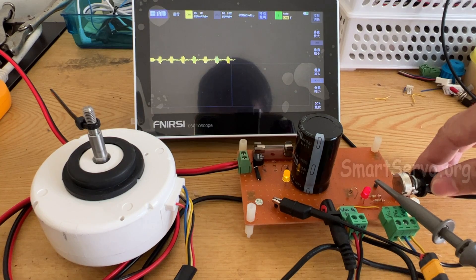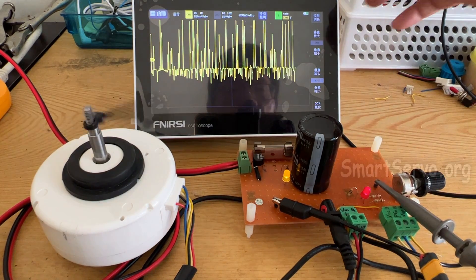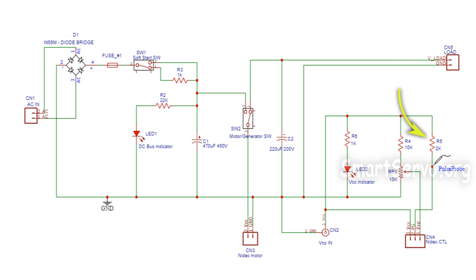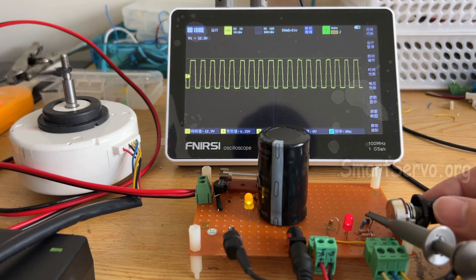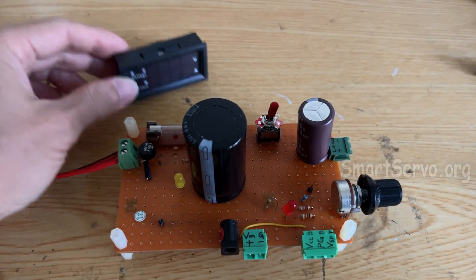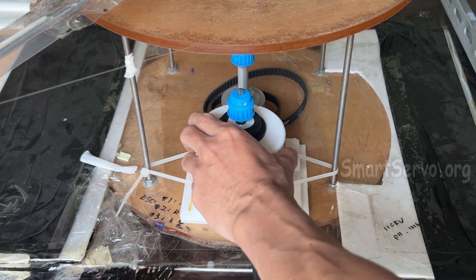In addition, the speed feedback signal PG cannot be measured directly. Add a pull-up resistor and measure again to get a square wave signal. Add two voltage and ammeters. Then install it on the wind turbine.